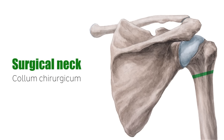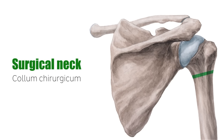Now we're looking at another neck — the surgical neck of the humerus. This is a narrow area found distal to the tubercles that is a common site for fractures. The surgical neck is in close contact with two other important structures: the axillary nerve and the posterior humeral circumflex artery.